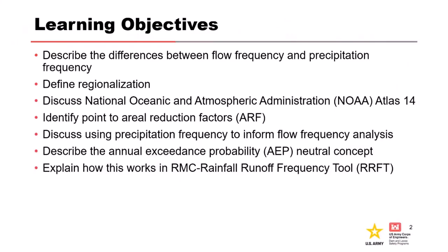Learning objectives: we'll talk briefly about some differences between flow frequency and precipitation frequency, define regionalization and look at that a bit more, then jump into NOAA Atlas 14 — how it came about, what it is, what it looks like, and what we can use it for. We'll also cover the aerial reduction factor, how we develop and use precipitation in flow frequency, the AEP-neutral concept, and RMC's Rainfall Runoff Frequency Tool, which we call RAFT.